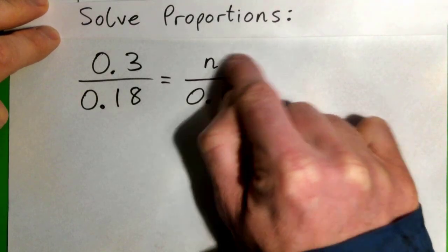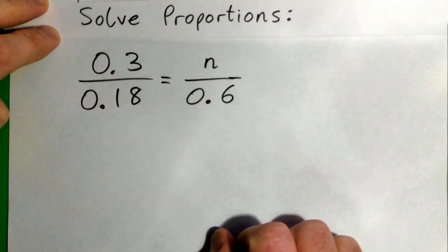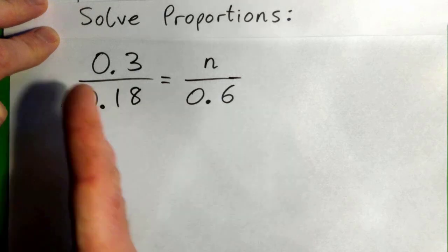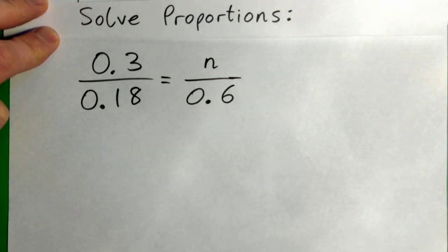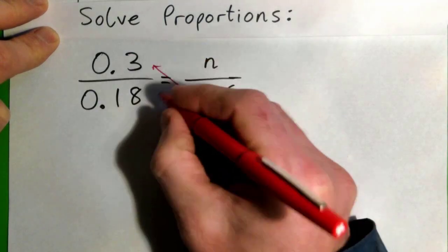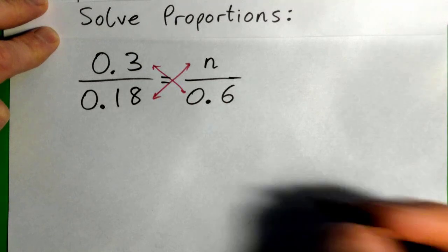What is this number that will go here that will make this proportion correct? A proportion is a fraction equal to a fraction. Whenever you have a fraction equal to a fraction, you can cross multiply like this. This number times this number equals this number times this number, or vice versa, any way you want.